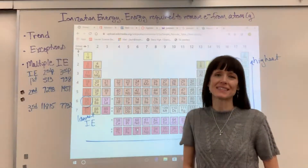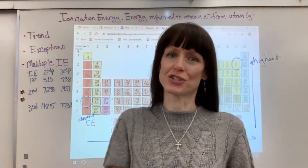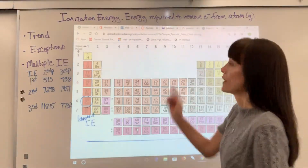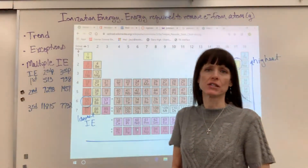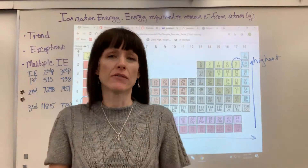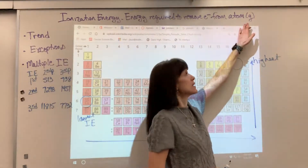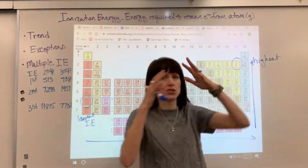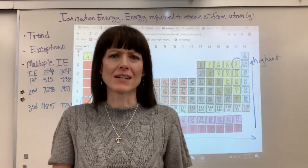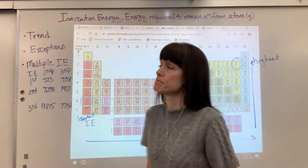We are going to talk about ionization energy — the trend for ionization energy. Here's your definition: the ionization energy is the energy required to remove an electron from an atom. Very specifically, it is an atom in its gas phase — that's why I put the G in parentheses. People talking fast will just say energy required to remove an electron.